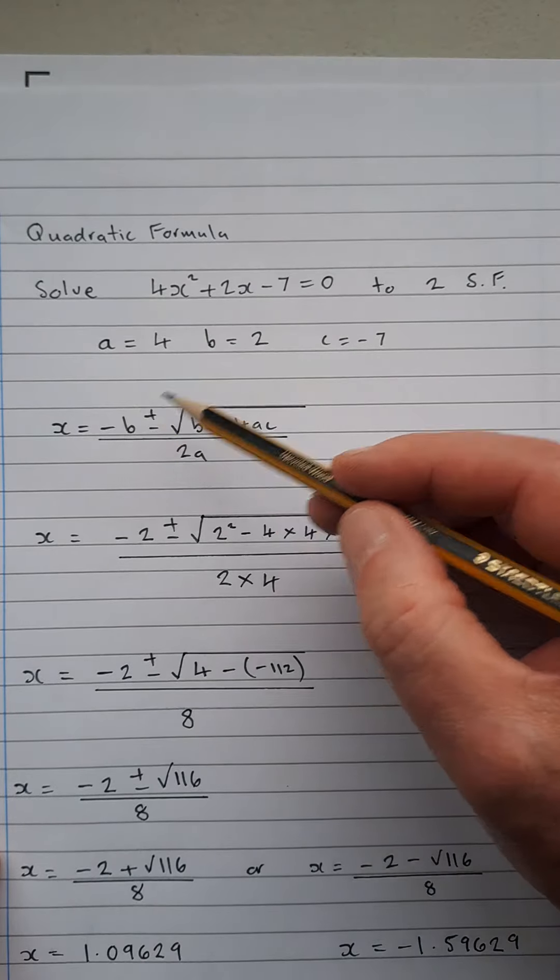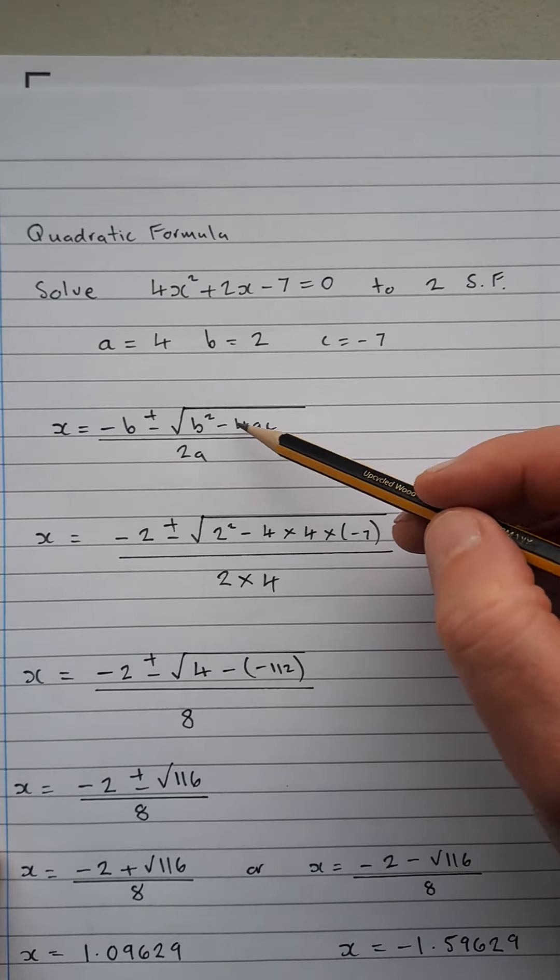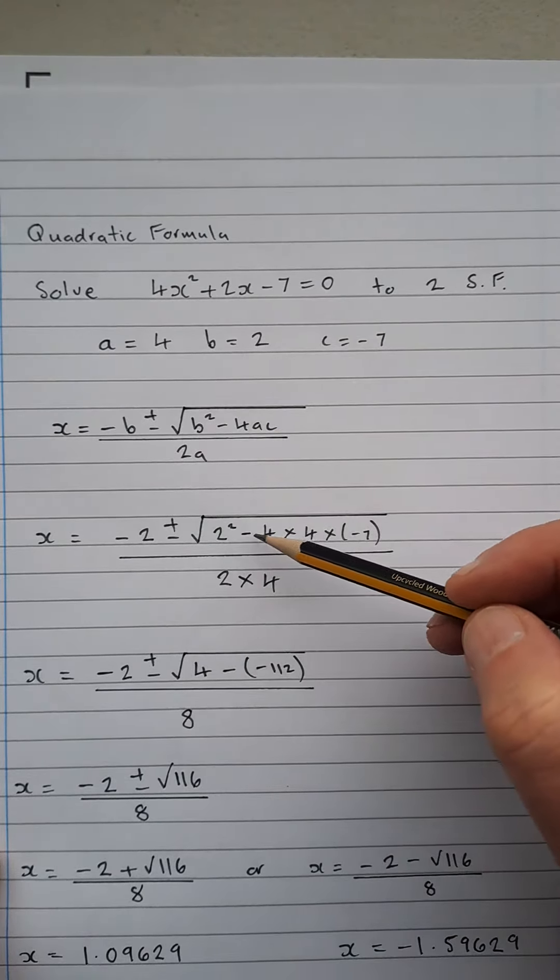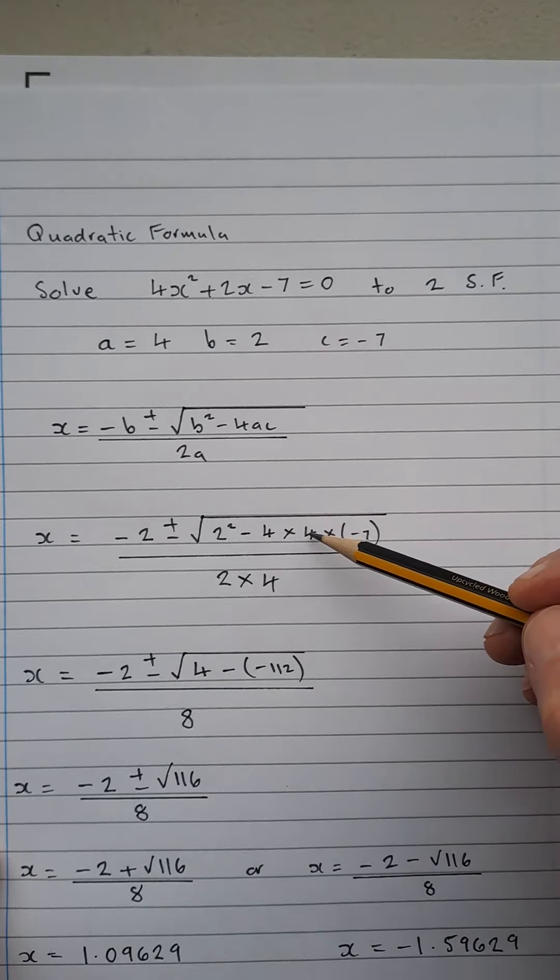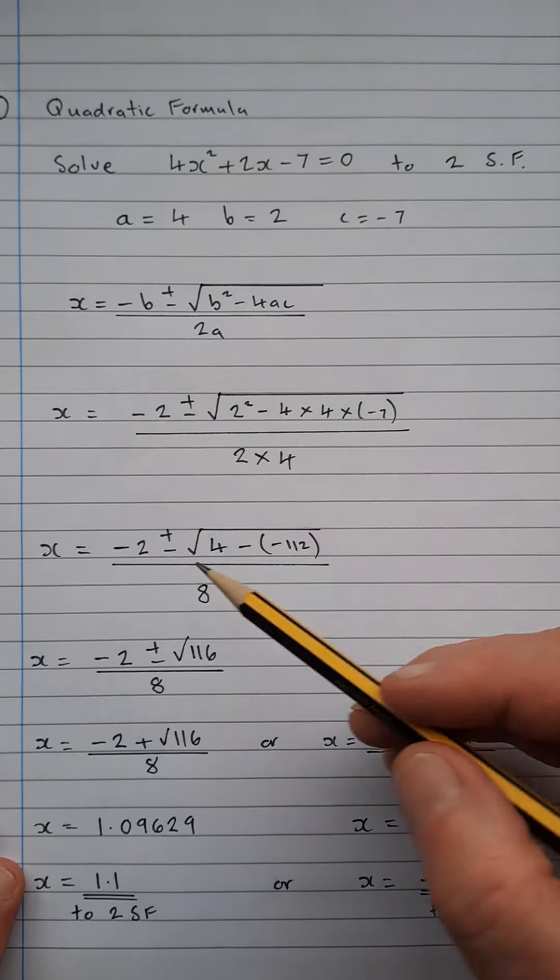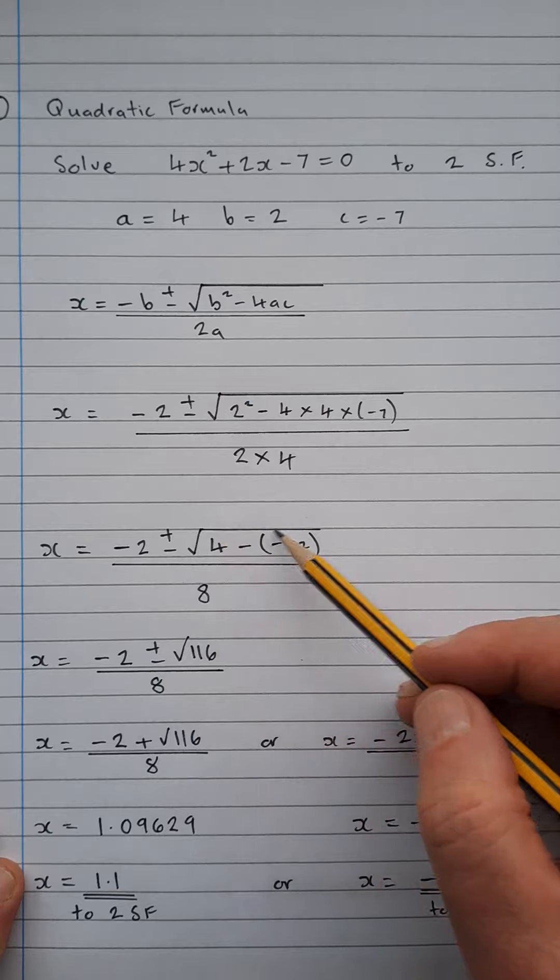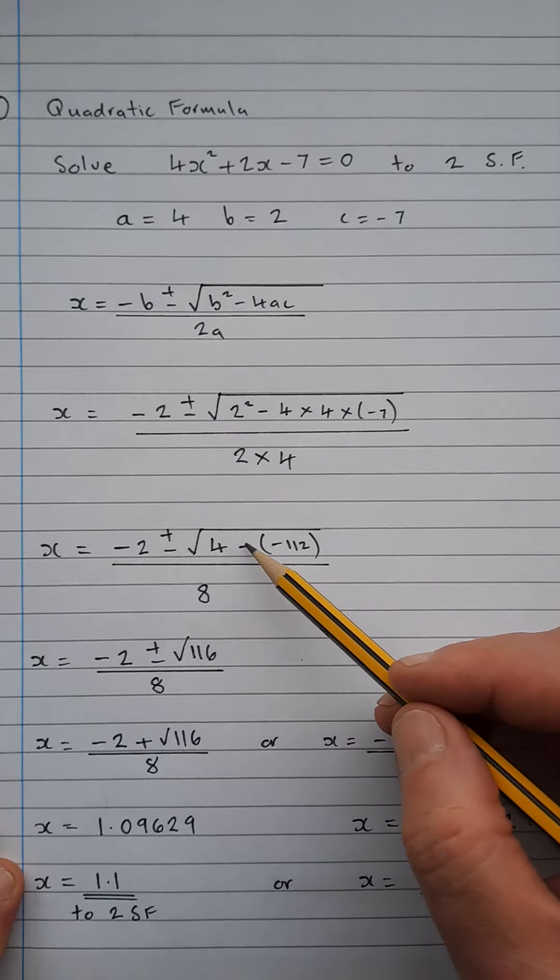So we have minus b minus 2 plus or minus the square root of b² minus 4ac. 2² minus 4 times a, 4 times minus 7. I tend to take my time with these so it's a little bit at a time there. So we have minus 2 plus or minus the square root of 4, take away,